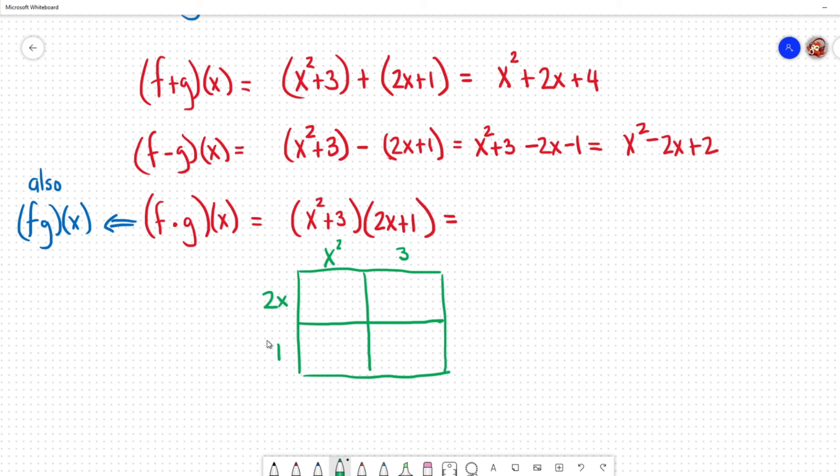So I'll start with x squared and 3 and then 2x and plus 1. So now I just multiply what's on the sides of the boxes together. So x squared times the 2x. So x squared times the 2x that's going to become 2x cubed. Then I have x squared times 1 is x squared. 3 times 2x is 6x. And finally 3 times 1 is 3. So now I just add up all the stuff in the boxes. So now we got 2x cubed plus x squared plus 6x plus 3. And that is my answer for this multiplication.